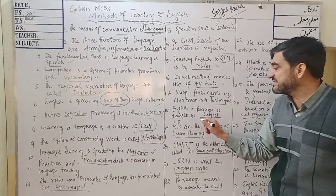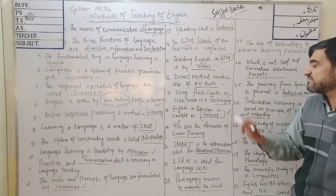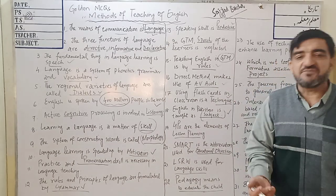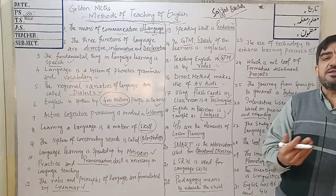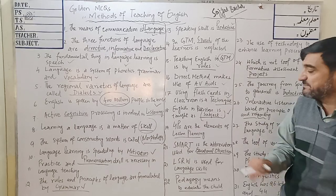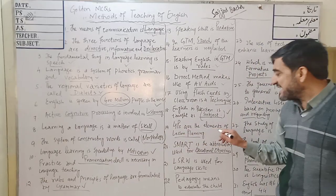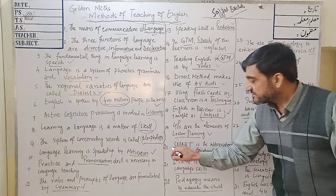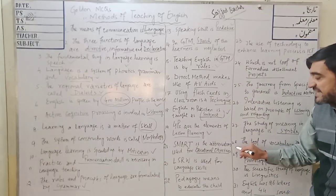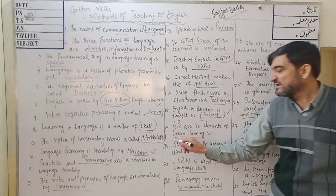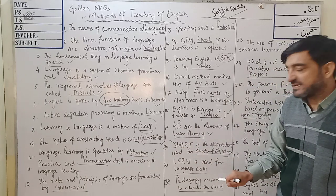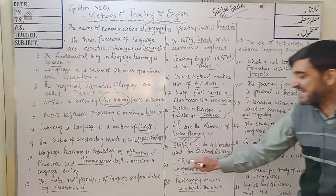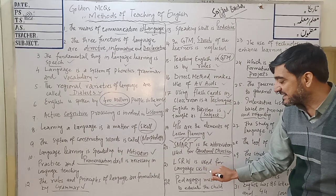MCQ 18: English in Pakistan starts as a subject. The dilemma is that students in Pakistan are unable to develop their fluency — they have a lot of knowledge but are unable to communicate. MCQ 19: The Five P's are the elements of lesson planning used in the Herbartian lesson plan. MCQ 20: SMART is the abbreviation used for educational objectives — Simple, Measurable, Attainable, Realistic, and Time-bounded.